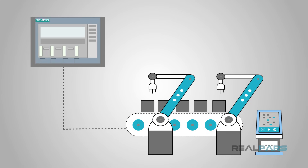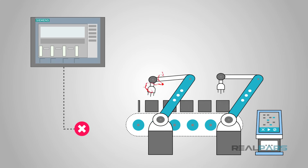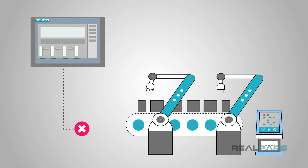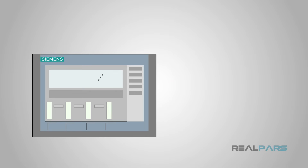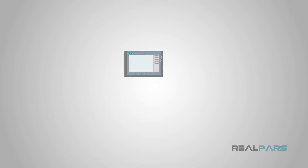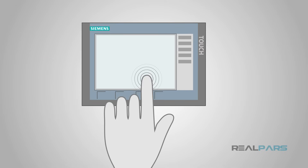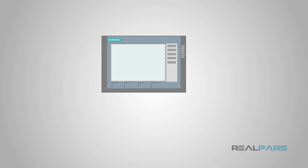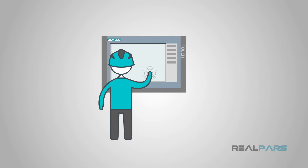Let's talk about industrial HMIs now. It would be hard to have a good automated process in industry without an HMI. Many times, an HMI will be in the form of a screen, kind of like a computer screen, and more times than not, they are touch screen. An operator or maintenance personnel can operate and monitor the machine from the HMI.